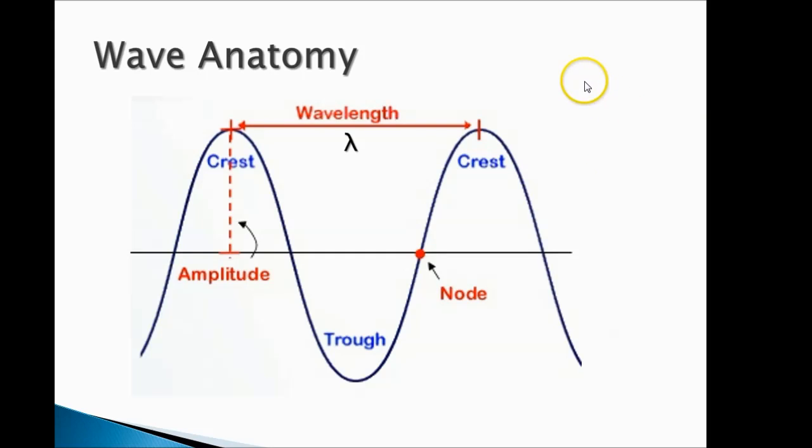The basic anatomy of a transverse wave is you have your crests, which are the high points, and your troughs, which are the low points.